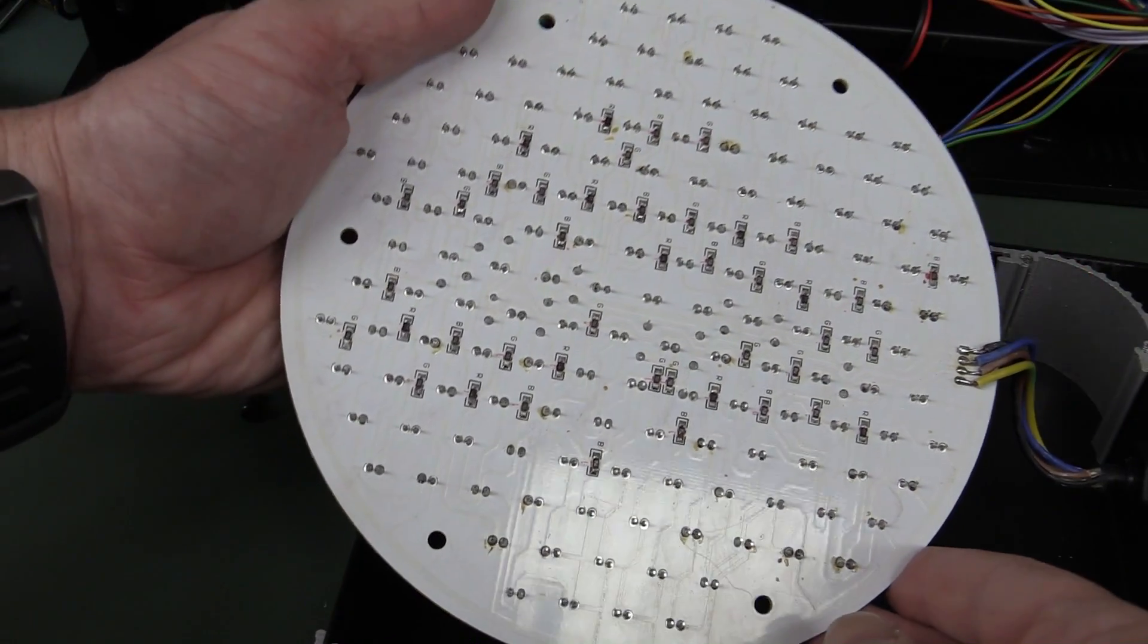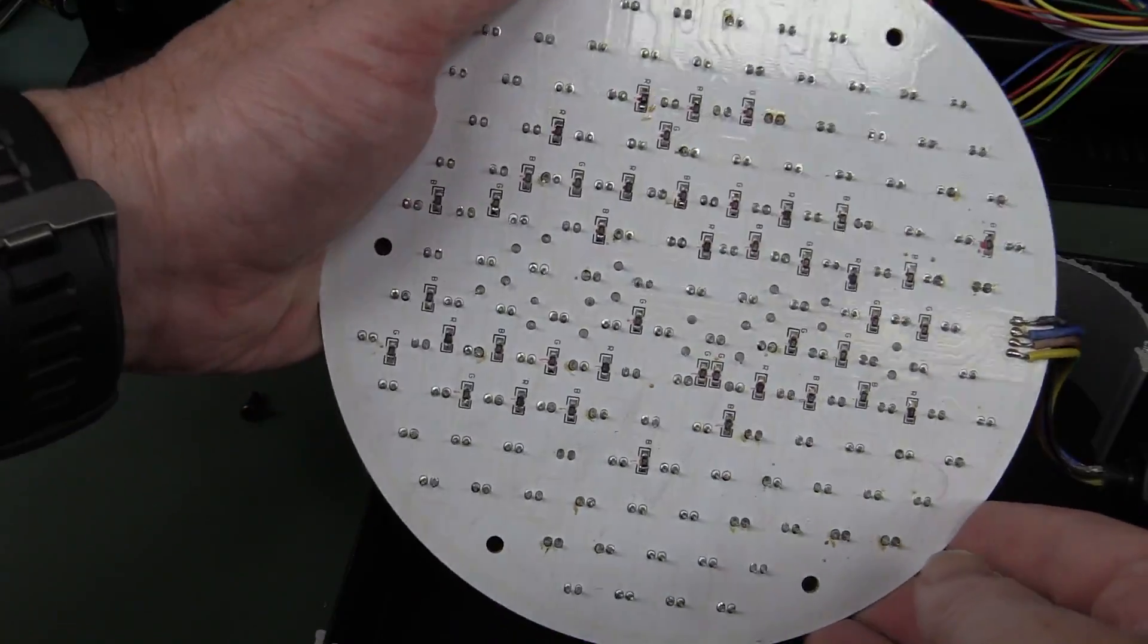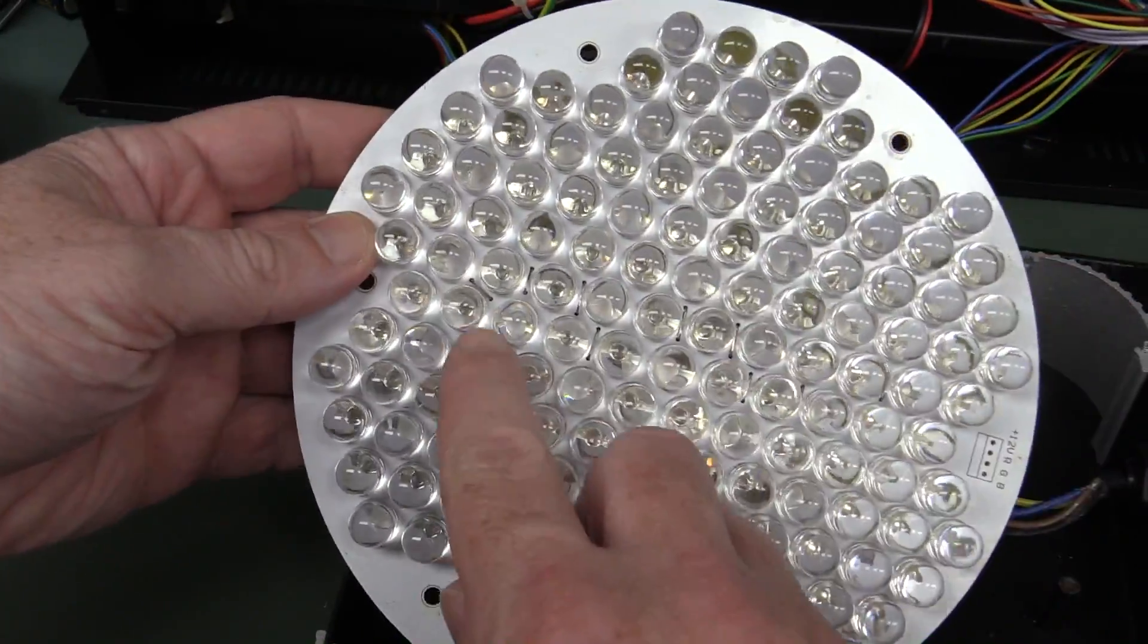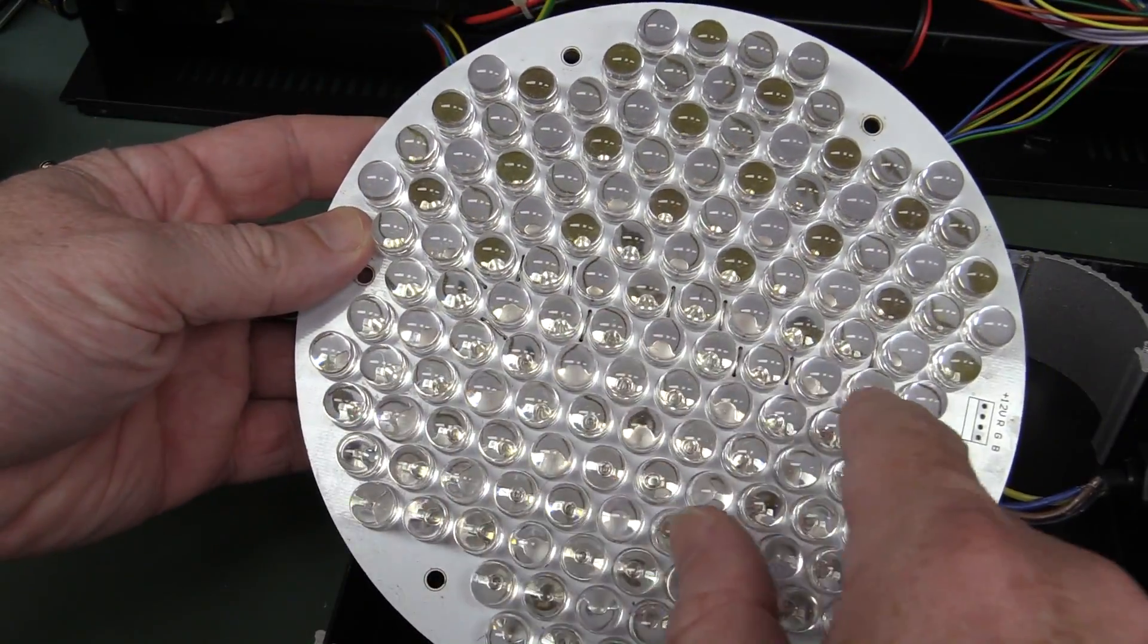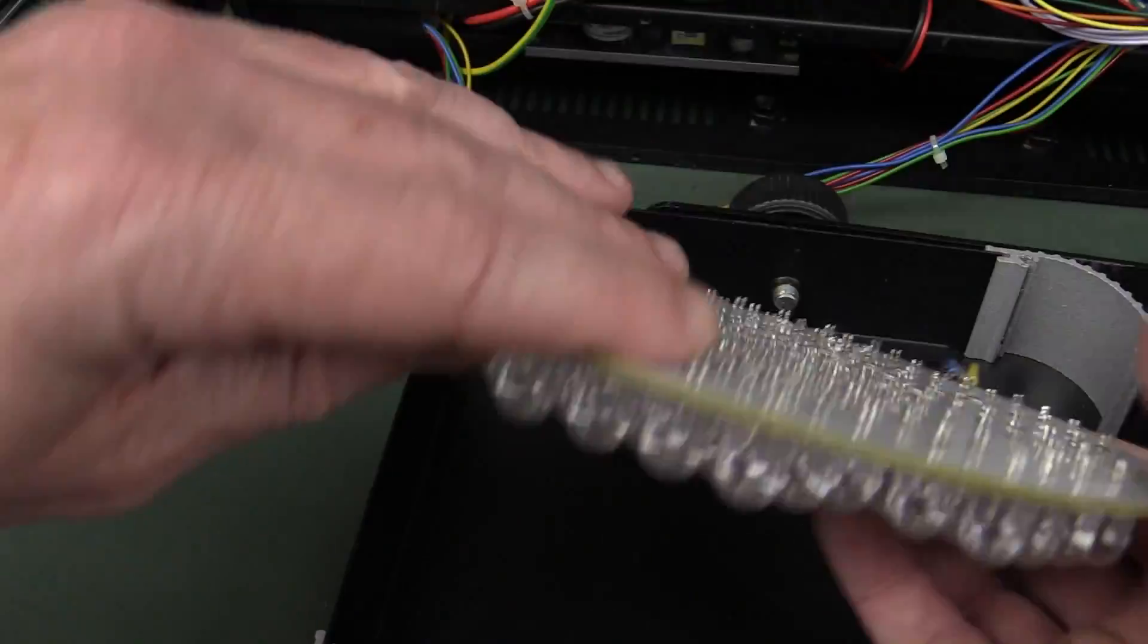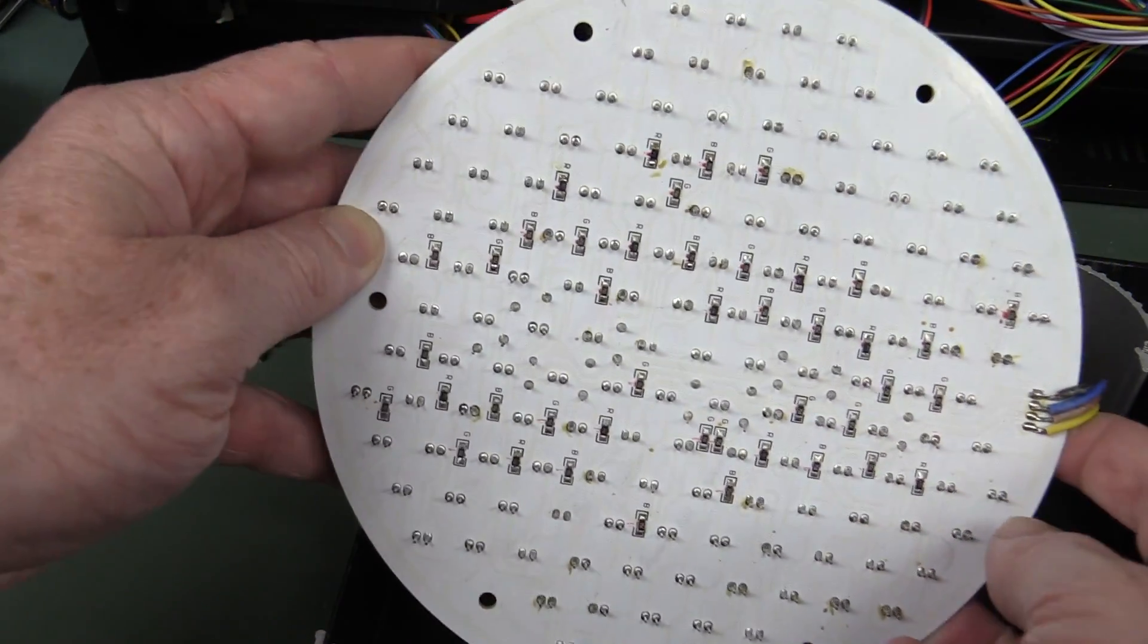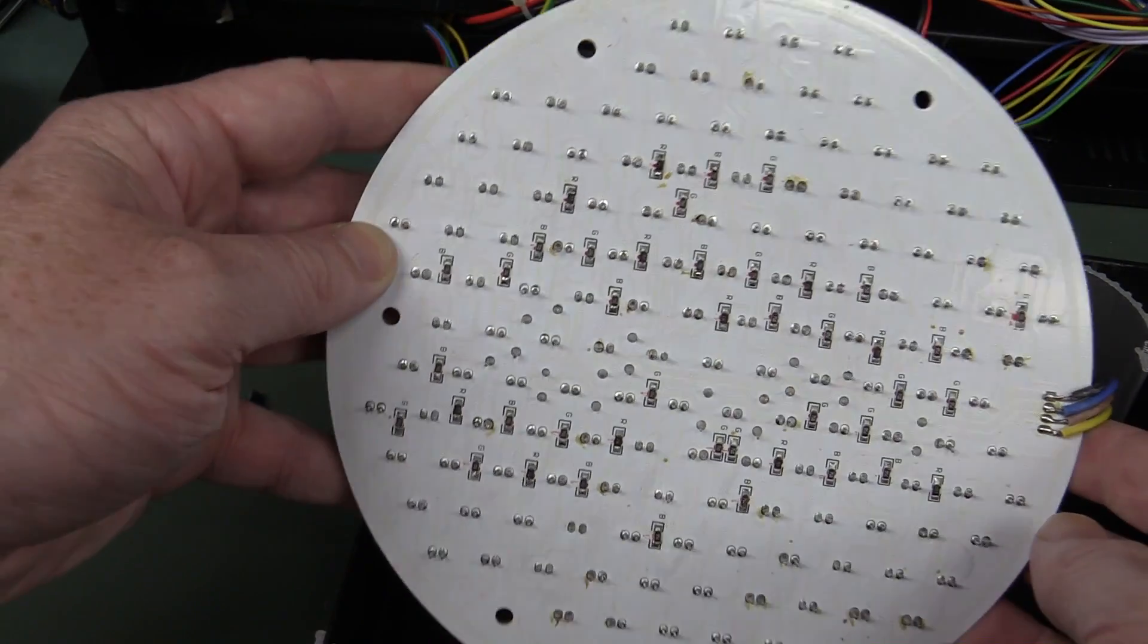I'll tell you one thing though, they've done a reasonable job getting that layout single-sided without, they've only got a few links. You can maybe see those little jumper links down in there. I don't know, could you have got away with that without any links? But I hate the white solder mask, it's hard to see the traces underneath, real pain in the arse.